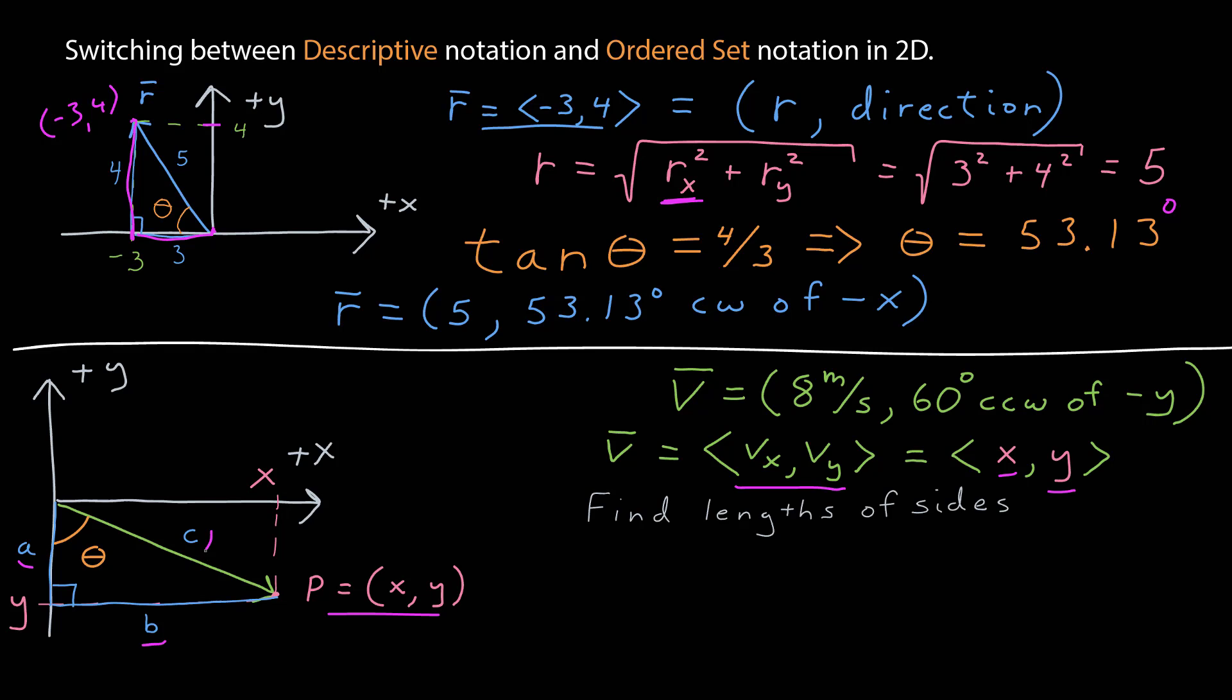To find the length a, I use the trig rule that cosine theta is equal to the adjacent over the hypotenuse, so a is equal to cosine theta times the length c. If the length c is 8, cosine of 60 degrees is 1 half, and so the length of a is 4.